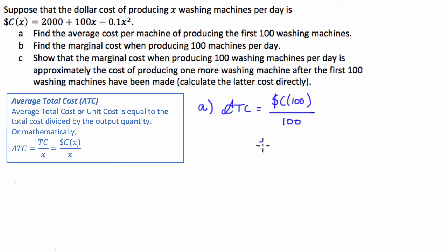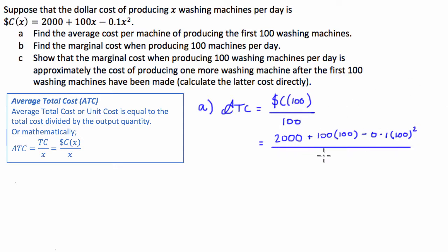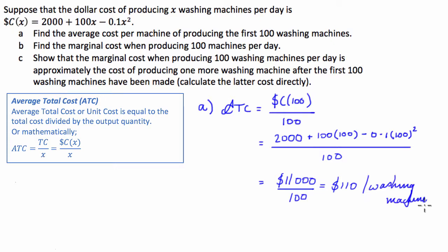To do the working out, I'm going to sub 100 into our cost function, so we have 2,000 plus 100 times 100 minus 0.1 times 100 squared, and all of that is going to be divided by 100. So if I calculate this, I get 11,000 divided by 100, which is equal to $110 per washing machine.